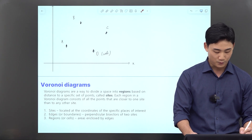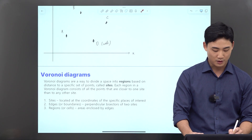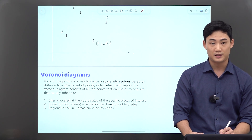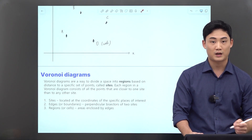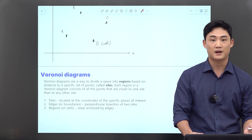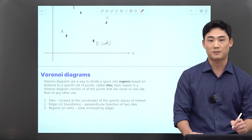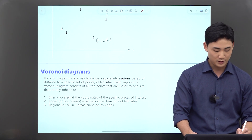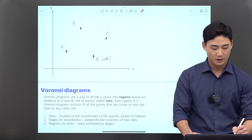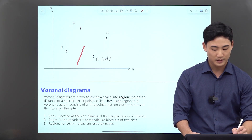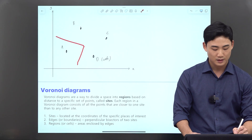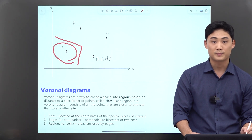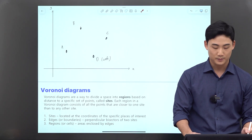Then we have the edges, which are the perpendicular bisectors of two sites. We'll learn how to draw these and find the equations of these bisectors. And then regions — where all these boundaries form a closed boundary to create a region.